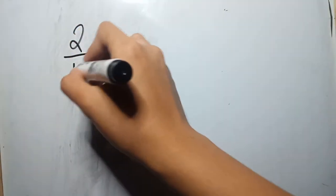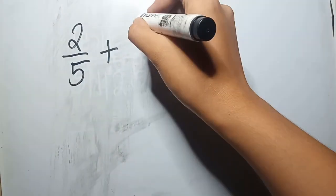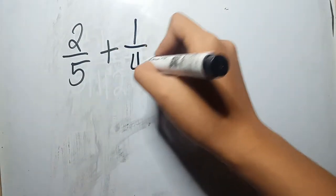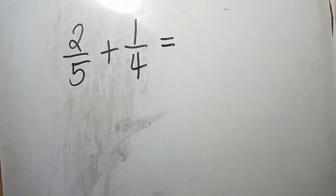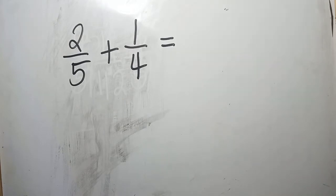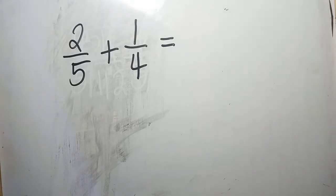How about if we will add dissimilar fractions, or fractions with different denominators? Let's say, 2 fifths plus 1 fourth. As you can see, we cannot just simply copy the denominator because the denominators are different — we have 5 and 4. What are we going to do if we encounter dissimilar fractions? The first thing we are going to do is find the least common denominator of 5 and 4.